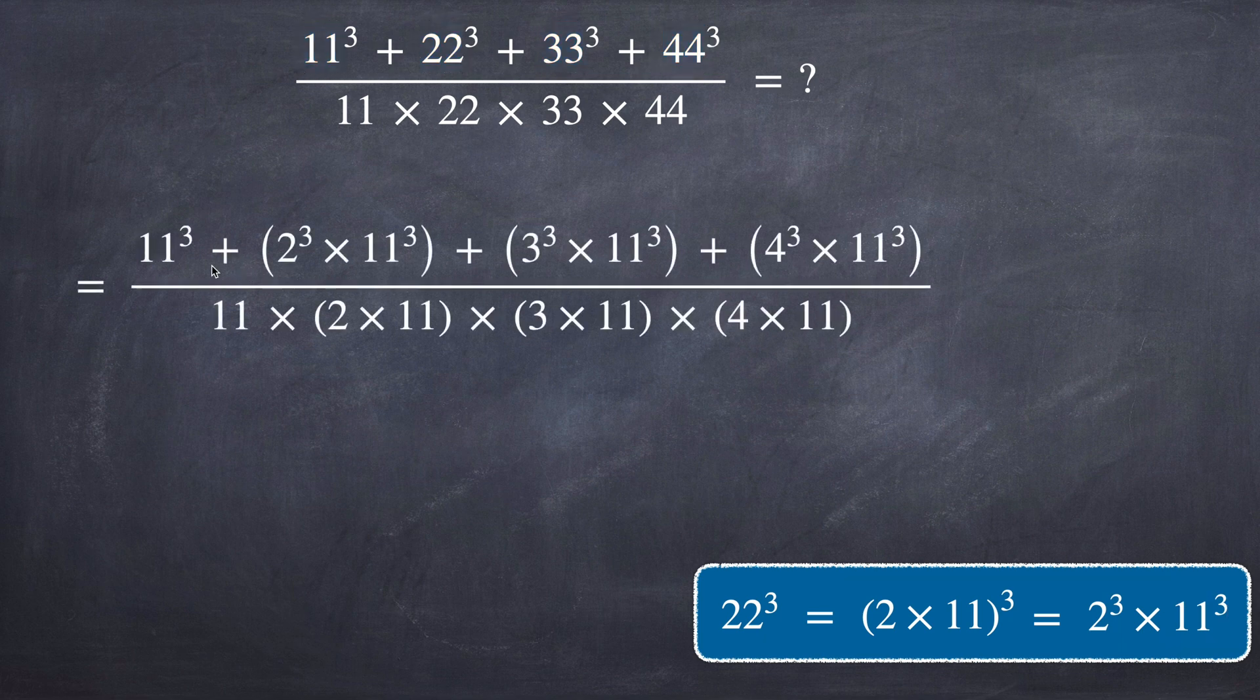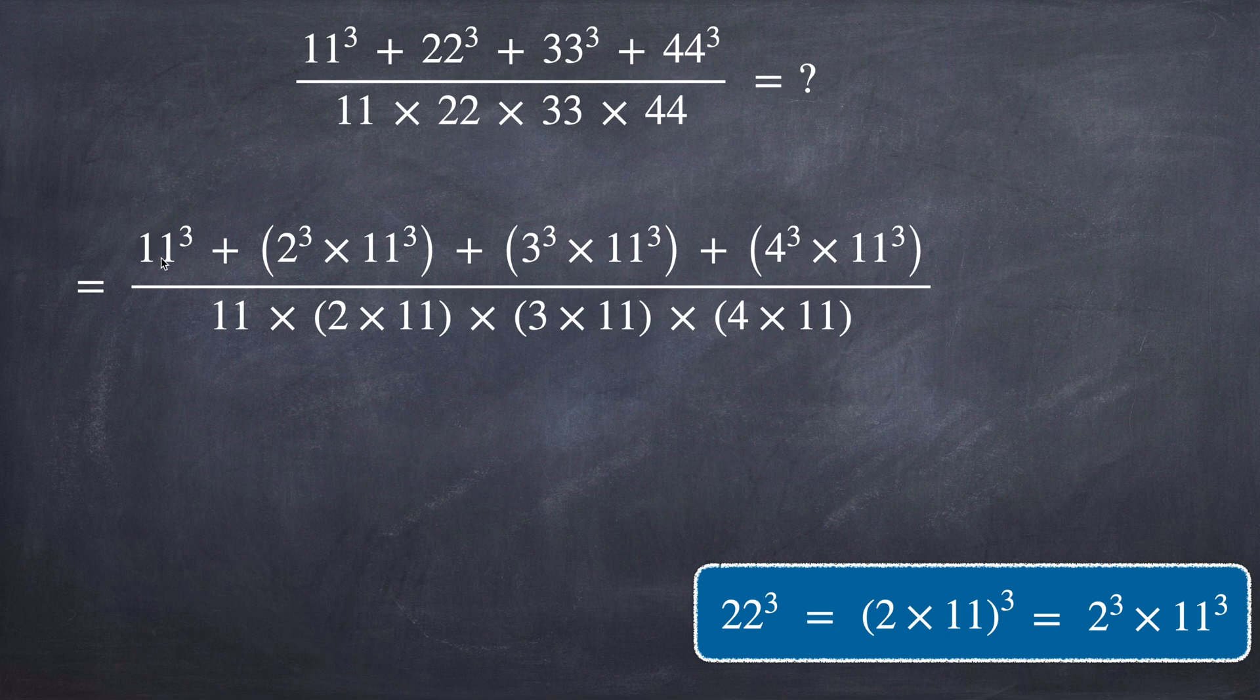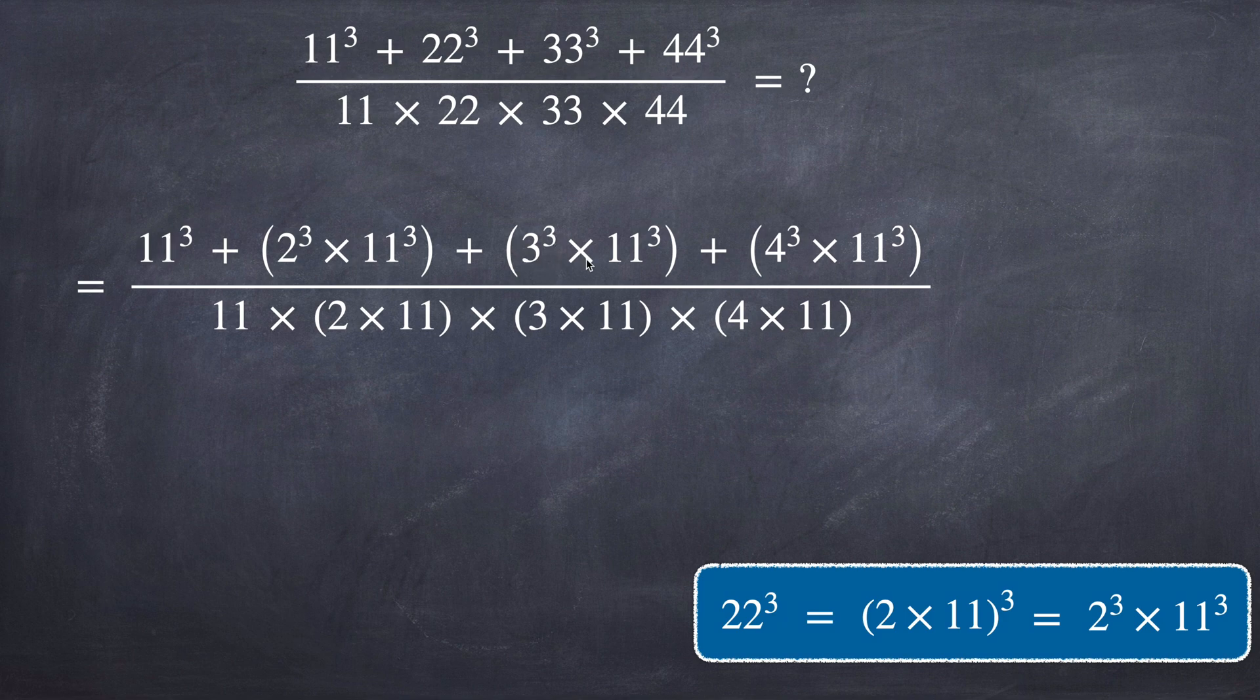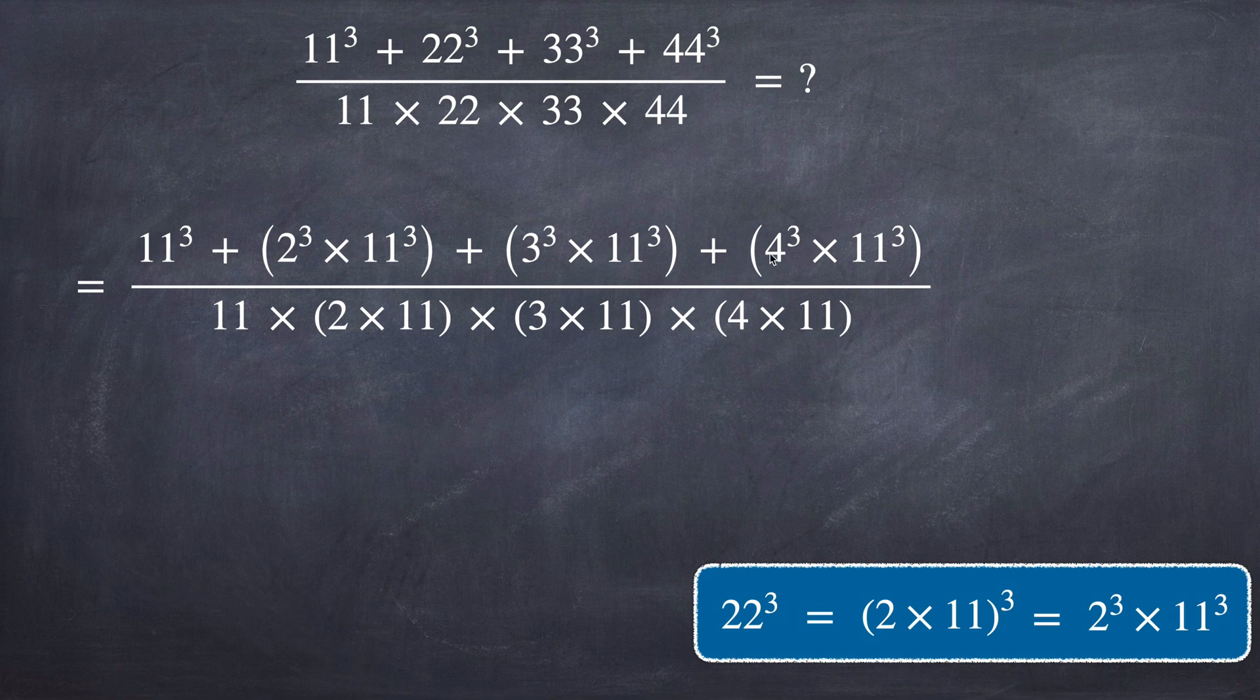So let's rewrite the numerator as 11 to the power of 3 plus 2 to the power of 3 times 11 to the power of 3, which is this result here, plus 3 to the power of 3 times 11 to the power of 3, and plus 4 to the power of 3 times 11 to the power of 3. In the denominator, let's write 11 times 2 times 11 times 3 times 11 times 4 times 11.